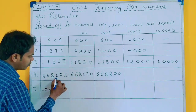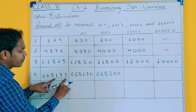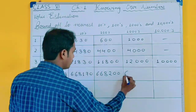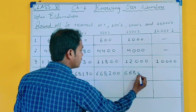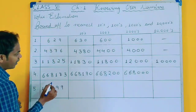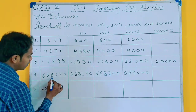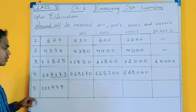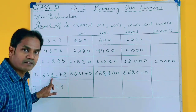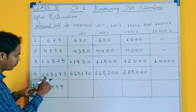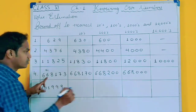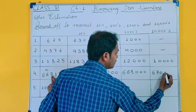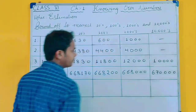For rounding off to 1000, you will check the last three values. It must be more than 500, but it is less than 500, so the result is 66,000. For rounding off to 10,000, you will check the last four digits — it is more than 5000, so you will do plus 1 here, giving 67,000.